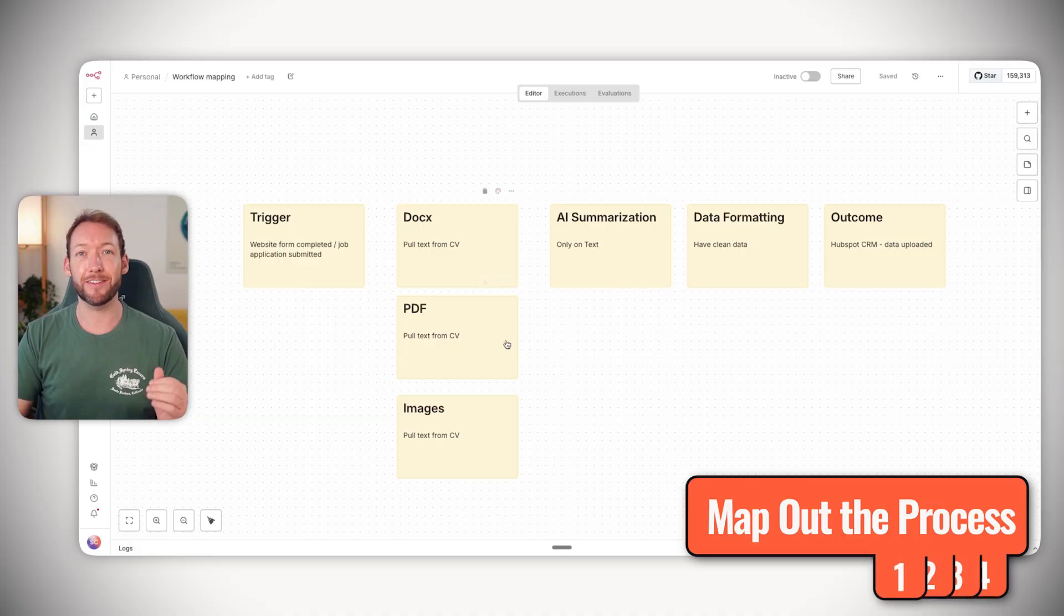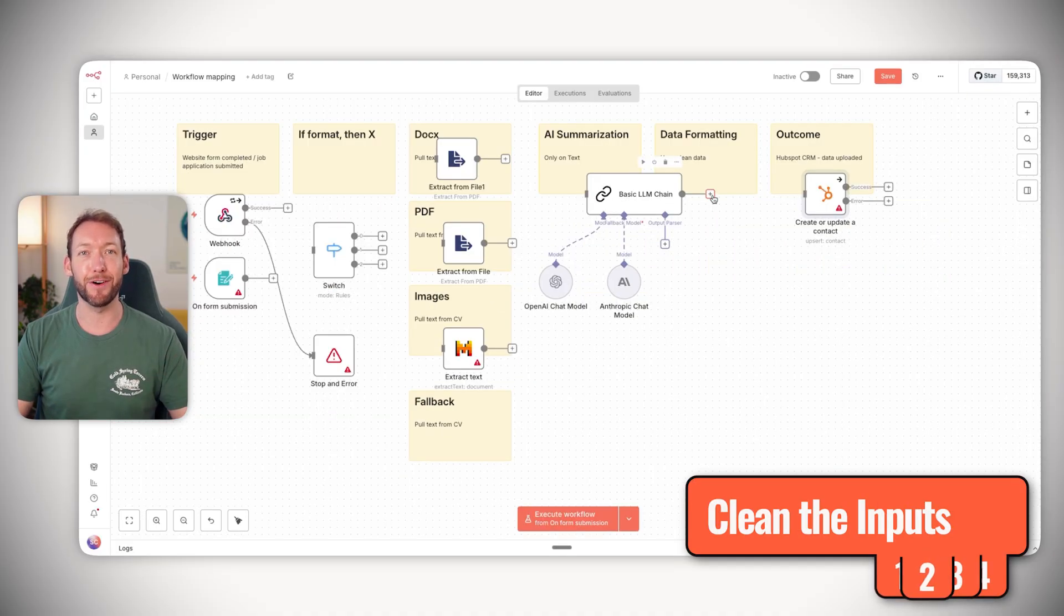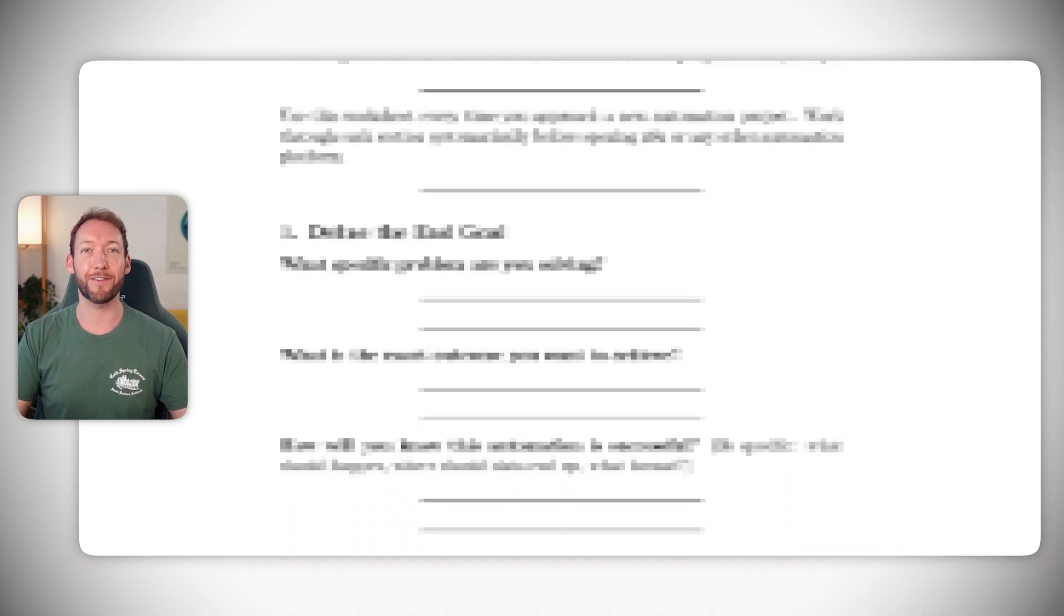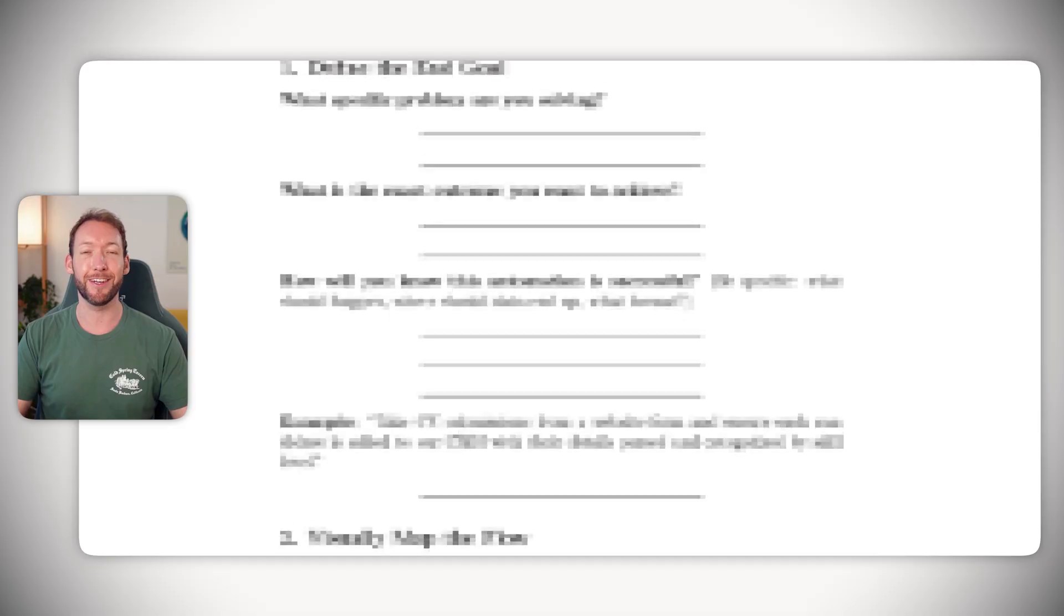Before you even touch a tool, you need to map the process, clean the inputs, and tick all the boxes of the pre-build checklist. That's what this video is about. And if you stick around to the end, I'll give you the automation planning worksheet that I use to map, clean, and prep every single automation before starting.